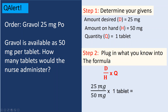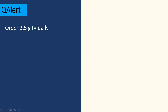Step two: plug in what you know into the formula — Desired over Have times Quantity. Desired dose is 25 milligrams, amount on hand is 50 milligrams, and the quantity is 1 tablet. Cancel out milligrams and milligrams, and you get 0.5 tablets. So for this order, the nurse will administer half a tablet.